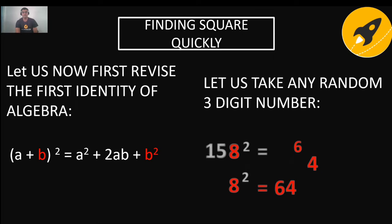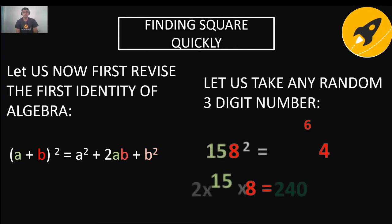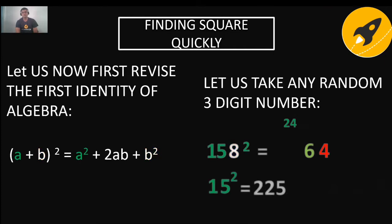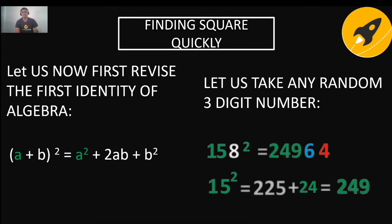For 158²: Step 1: 8² = 64; write 4, carry 6. Step 2: 2 × 15 × 8 = 240; add 6 to get 246; write 6, carry 24. Step 3: 15² = 225; add 24 to get 249. Writing all digits: 24964. So 158² = 24964.